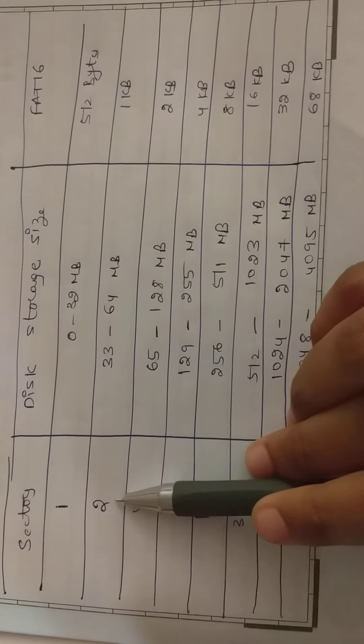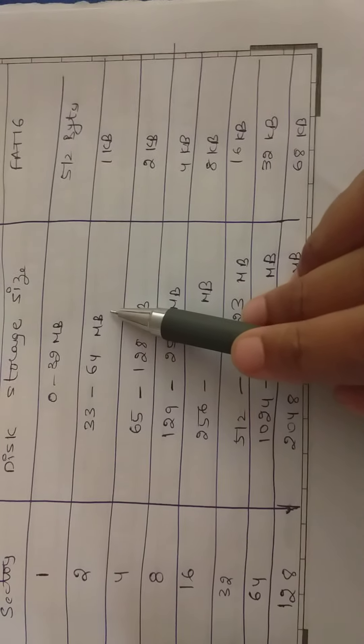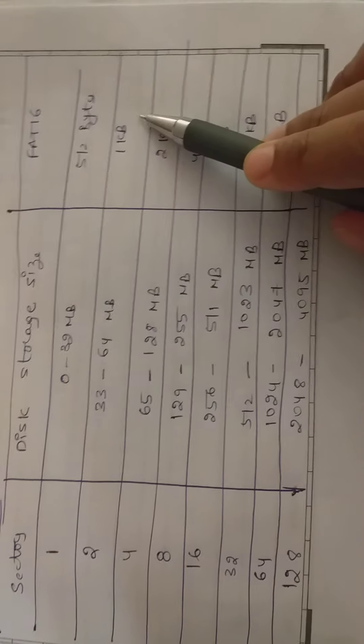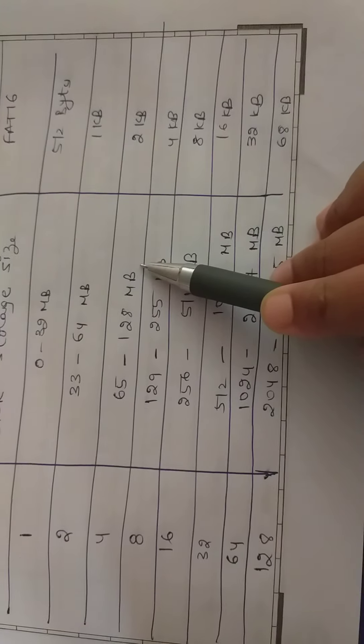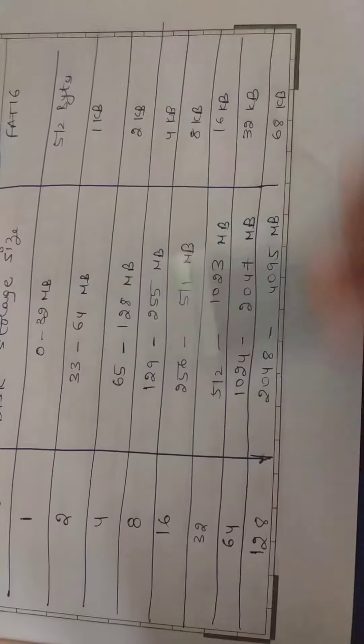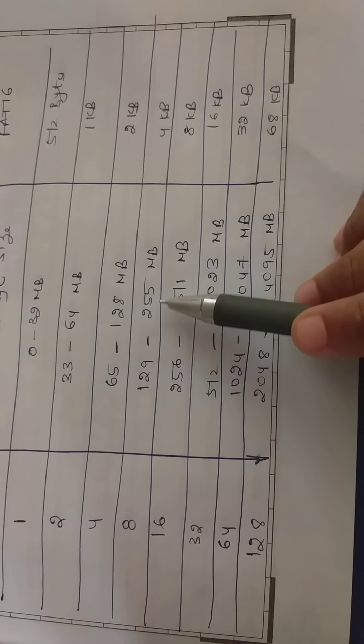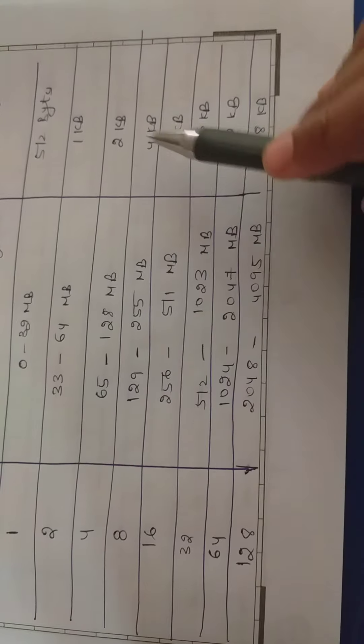Next, two sectors: 33 to 64 MB, 1 KB. Four: 65 to 128 MB, 2 KB. Eight: 129 to 255 MB, 4 KB.